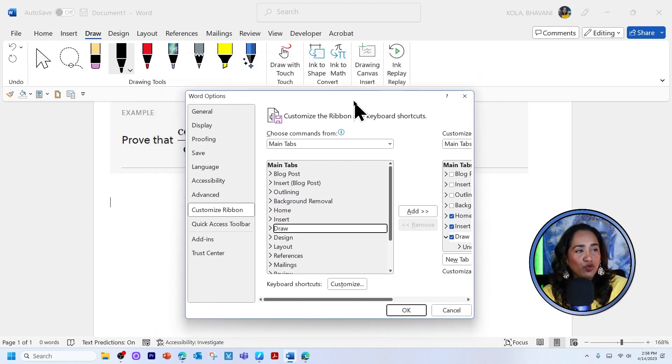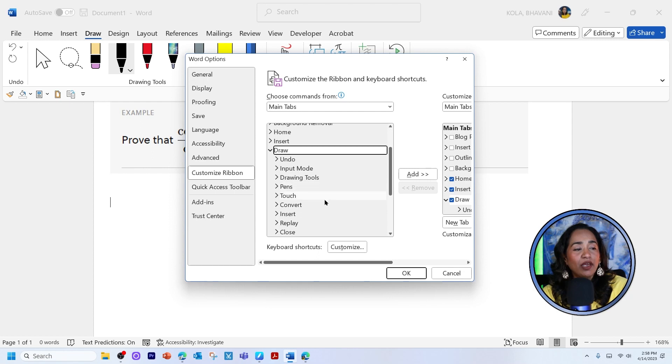But if you have the draw tool, but ink to math feature is missing, you will click on this little arrow here. Let me scroll up, click on this little arrow here.